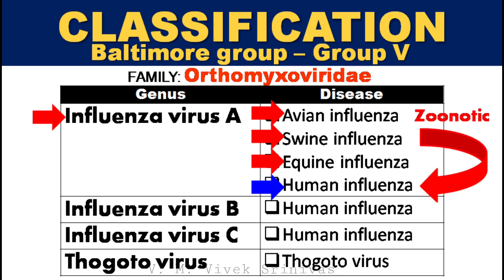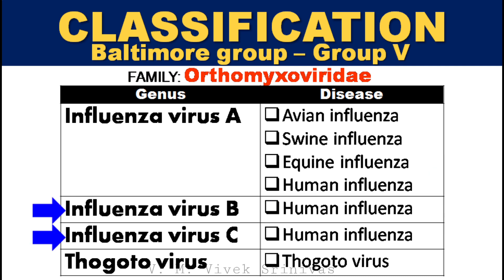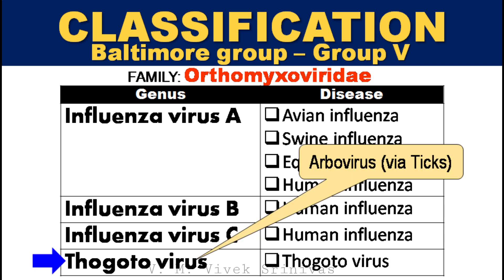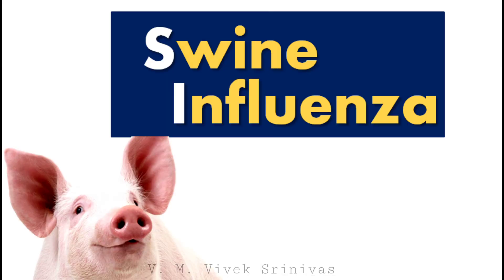Under the genus type A influenza virus, there are avian influenza, swine influenza, equine influenza, and human influenza. Type B and type C influenza viruses mostly infect humans and typically cause mild disease. Unlike the other genera which are transmitted by droplet, the thogatavirus or arbovirus, that is arthropod-borne virus, is transmitted by ticks.